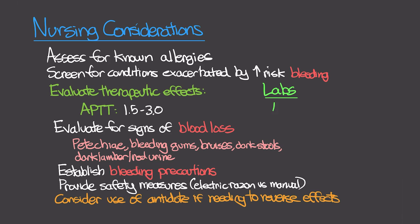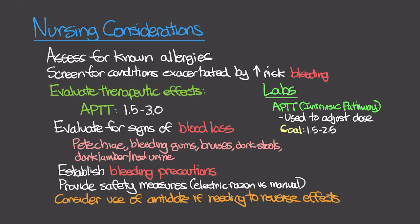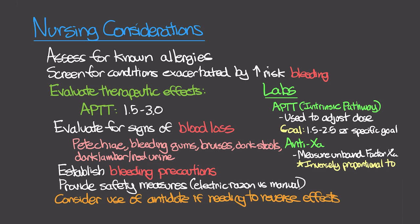Key lab studies to monitor include the aPTT or PTT, which measures activity of the intrinsic coagulation pathway — the area most impacted by heparin. The aPTT is used to adjust the heparin dose, with a goal of 1.5 to 2.5 times the patient's baseline, or a specific aPTT goal per provider preference. An anti-Xa level can also be measured, reflecting the amount of unbound factor Xa, which is inversely proportional to the heparin level. Together, these values guide whether the drip rate or dose needs to be increased or decreased.